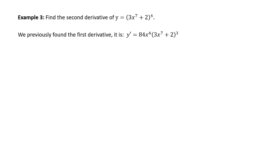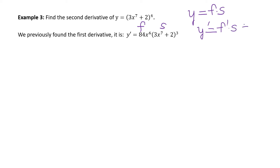Example: find the second derivative of the quantity 3x to the 7th plus 2 all raised to the 4. We previously found that first derivative, which was y prime equal to 84x to the 6th times the quantity 3x to the 7th plus 2 all raised to the 3. This is a messy-looking problem. I note that we have a product — a first function times a second function — so the product rule says the derivative is the derivative of the first times the second, plus the first times the derivative of the second.